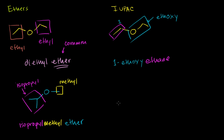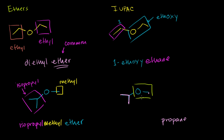For the IUPAC naming, we look for the longest carbon chain. We have three carbons on one side and only one carbon on the other, so the three-carbon chain is our longest. It has no double bonds, so it's propane. Then we look at the remaining group: the oxygen gives us the 'oxy' and the single carbon gives us 'meth,' so this is a methoxy group. It's attached to the two carbon of the propane chain no matter which direction you number, so this is 2-methoxypropane.